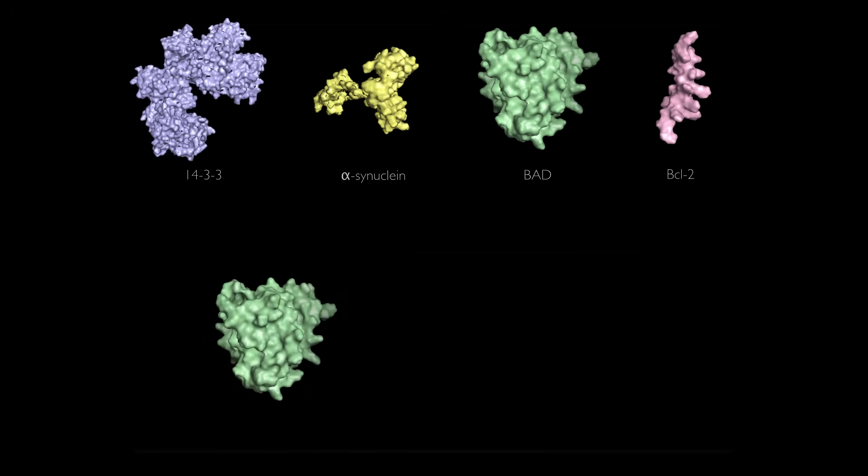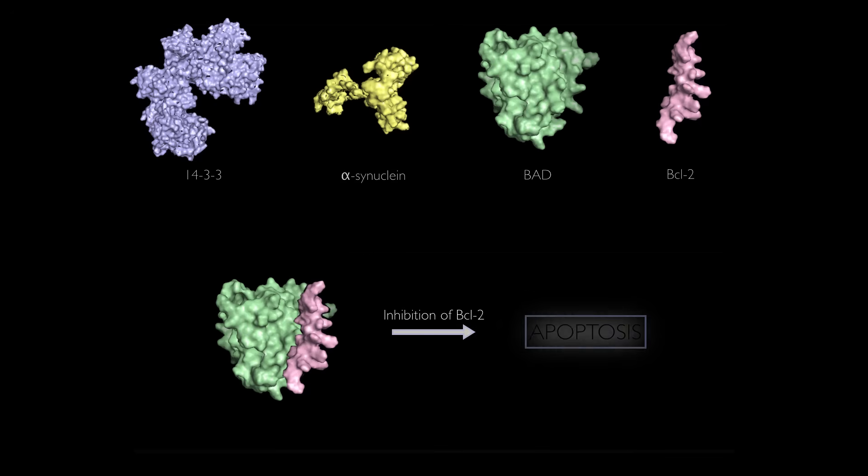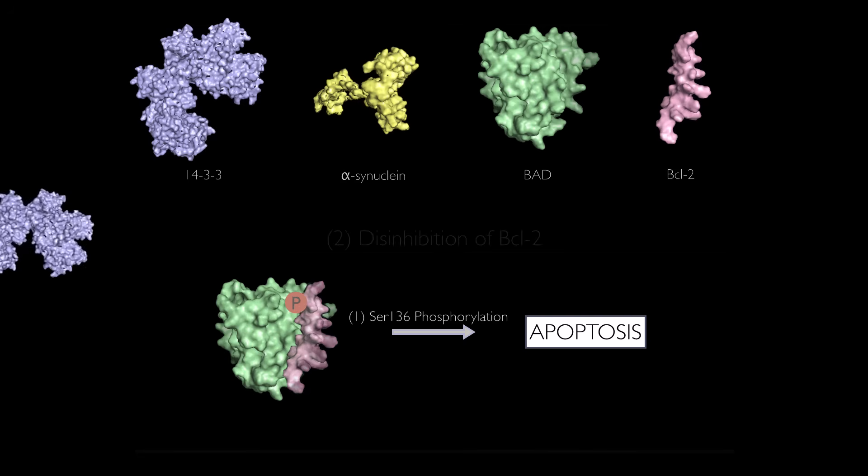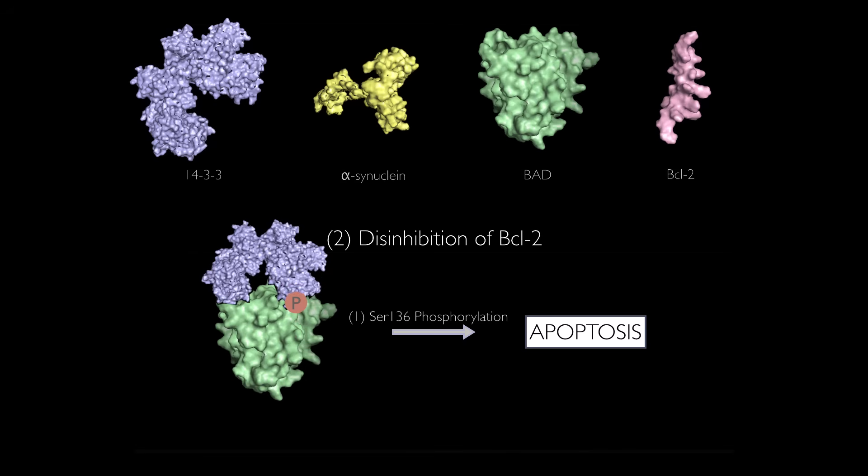BAD normally functions by binding and inhibiting BCL-2, therefore initiating the apoptotic pathway. However, phosphorylation of BAD at serine-136 allows for the binding of 14-3-3. This binding disinhibits BCL-2, which subsequently inhibits apoptosis.